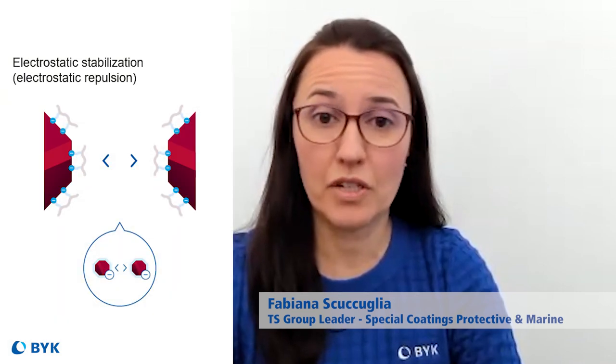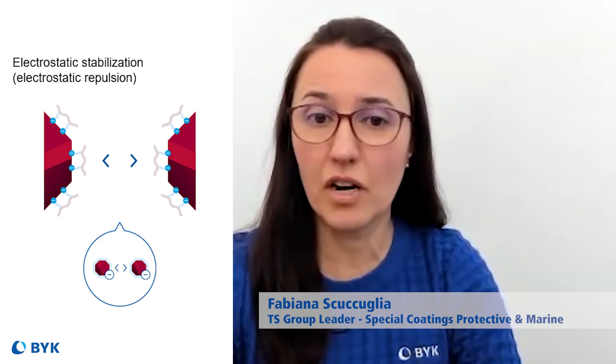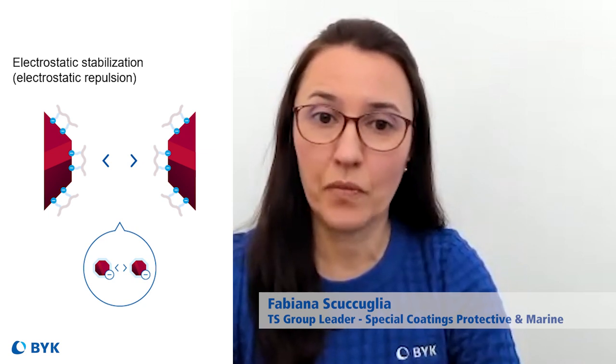Thanks for that explanation. So Fabiana, can you talk about how we maintain the stabilization over time to prevent re-agglomeration? Absolutely. We have three modes of stabilization, which all work as deflocculating mechanisms. The first one is electrostatic repulsion. Here, the additive builds a layer of electrical charge around the primary pigment particle. Other primary particles coated with the same additive have this outer charge, which repels the particles around and prevents re-agglomeration.